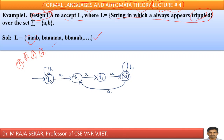Some possible strings include: AAA, BB, AAAAAABB, AAABB, and so on. For the first A we go from Q0 to Q1, second A to Q2, third A to Q3. As we are getting 3 consecutive As, it must reach the final state.